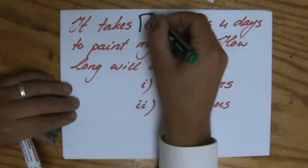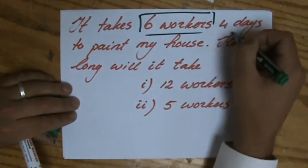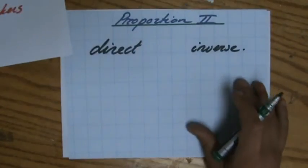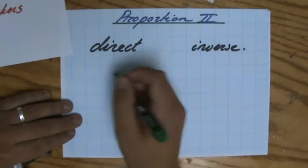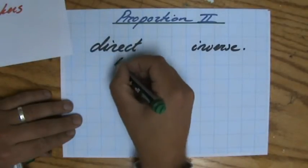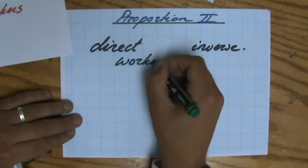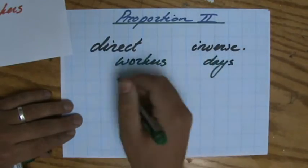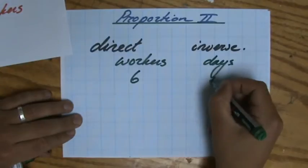Okay, so I have six workers and it takes them four days to paint my house. I'm going to put that in one of those diagrams. I prefer to do it with a diagram. So I have my workers and I have the amount of days again. And the six workers, they take four days.